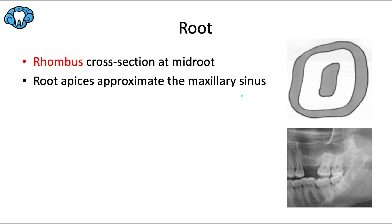The mid-root cross-section also follows a rhombus shape, mirroring the occlusal outline. The root apices of this tooth tend to approximate the floor of the maxillary sinus, as visible on panoramic radiographs.